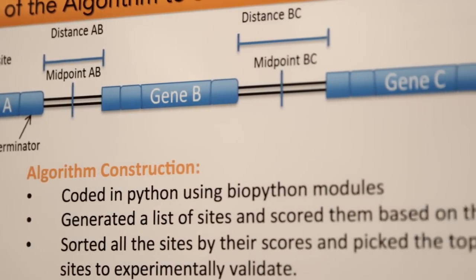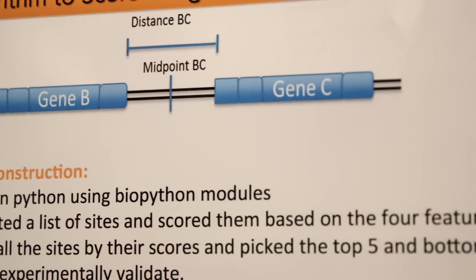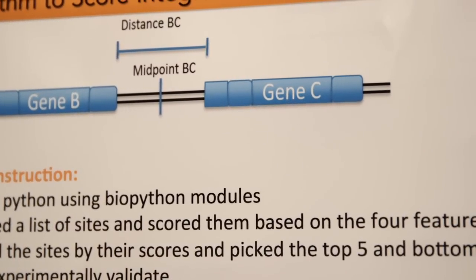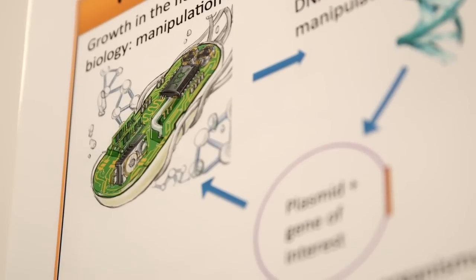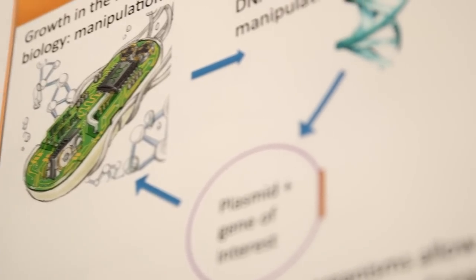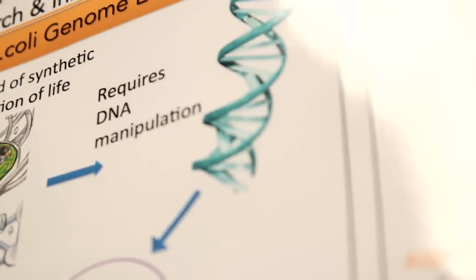However, the problem is where do you actually put in that gene? Do you put it at side A or side B? You want the regions of insertion that are minimally disruptive to the actual host. And so I'm developing an algorithm based on a few metrics.